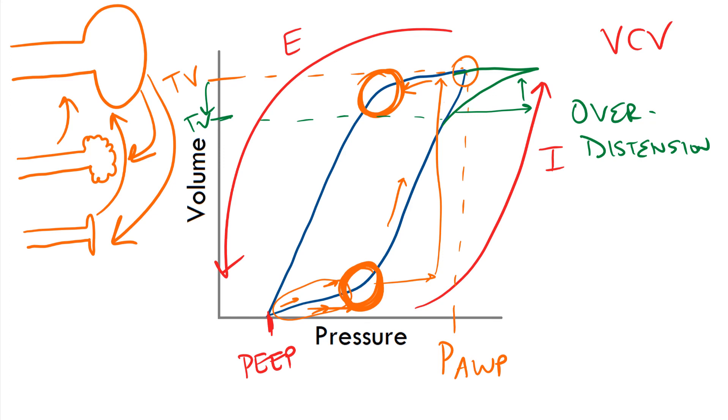Now, again, you can't see over distension in pressure control ventilation because in those curves, the pressure is completely constant.